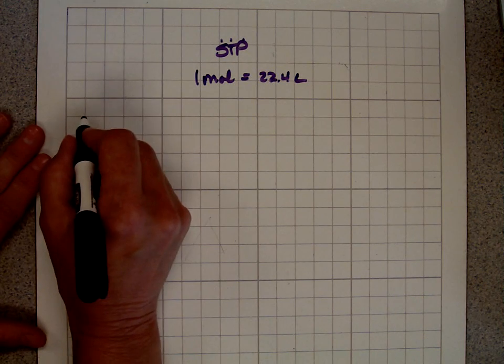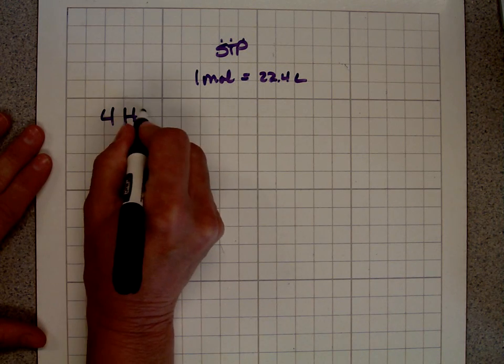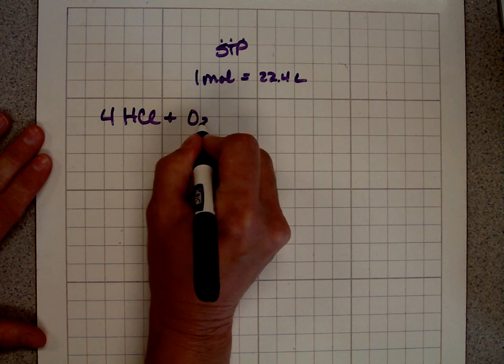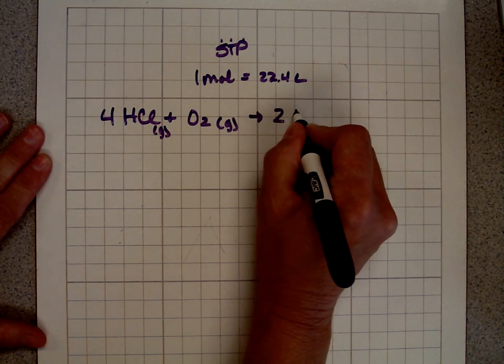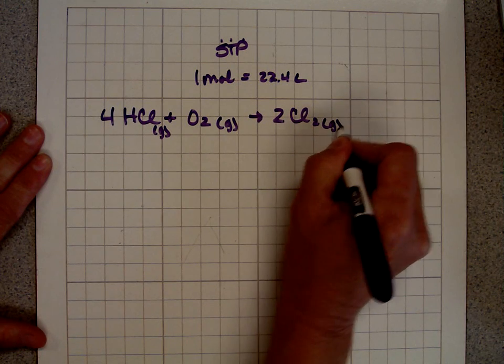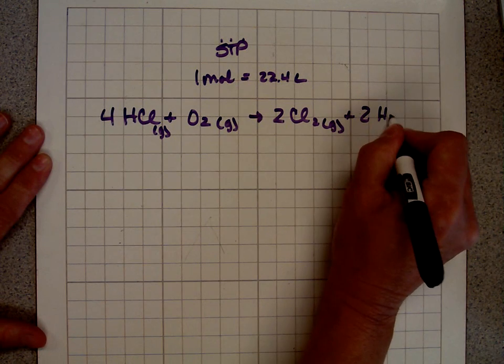Today's equation is four moles of hydrochloric acid react with oxygen, and these are all gaseous, and they form two moles of chlorine gas and two moles of water.